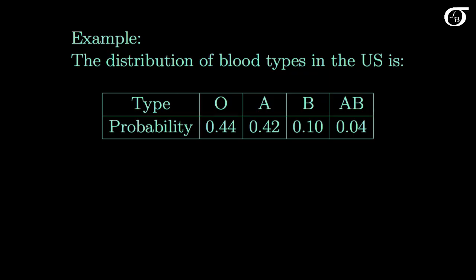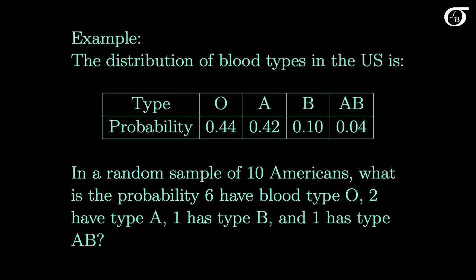Let's take a look at an example. This is approximately the distribution of blood types in the United States. Suppose we wanted to know the answer to this question: in a random sample of 10 Americans, what is the probability 6 have blood type O, 2 have type A, 1 has type B, and 1 has type AB? When any one individual person is sampled, they are going to have one of these four blood types according to these probabilities. And we're going to be able to answer this question using the multinomial distribution.